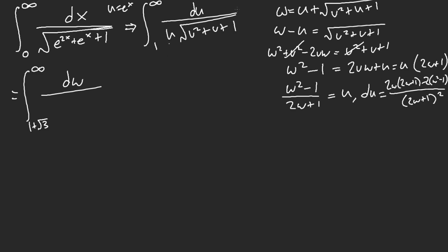All right, u, what is u? u is right here. Right? w square minus 1, 2w plus 1.